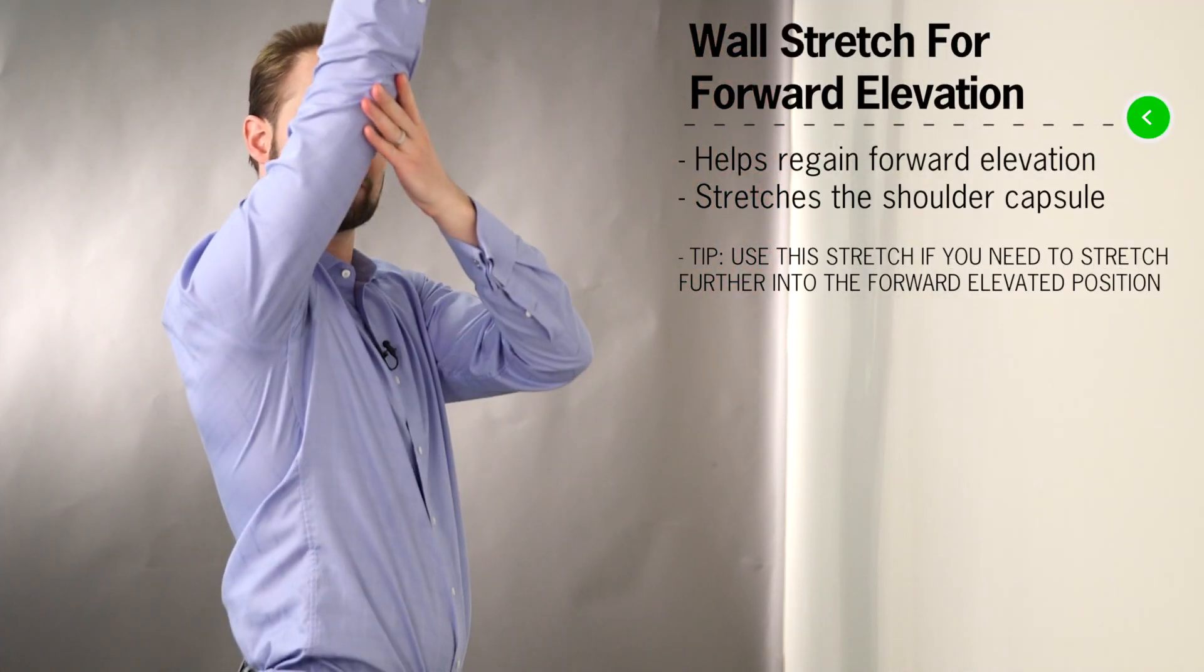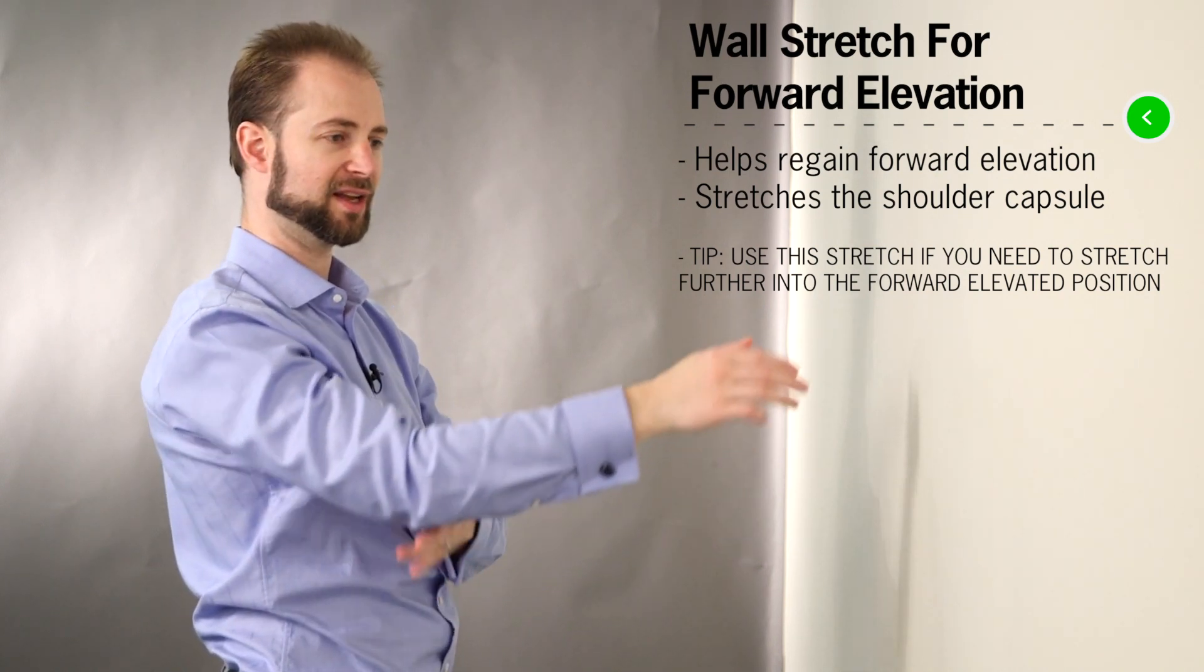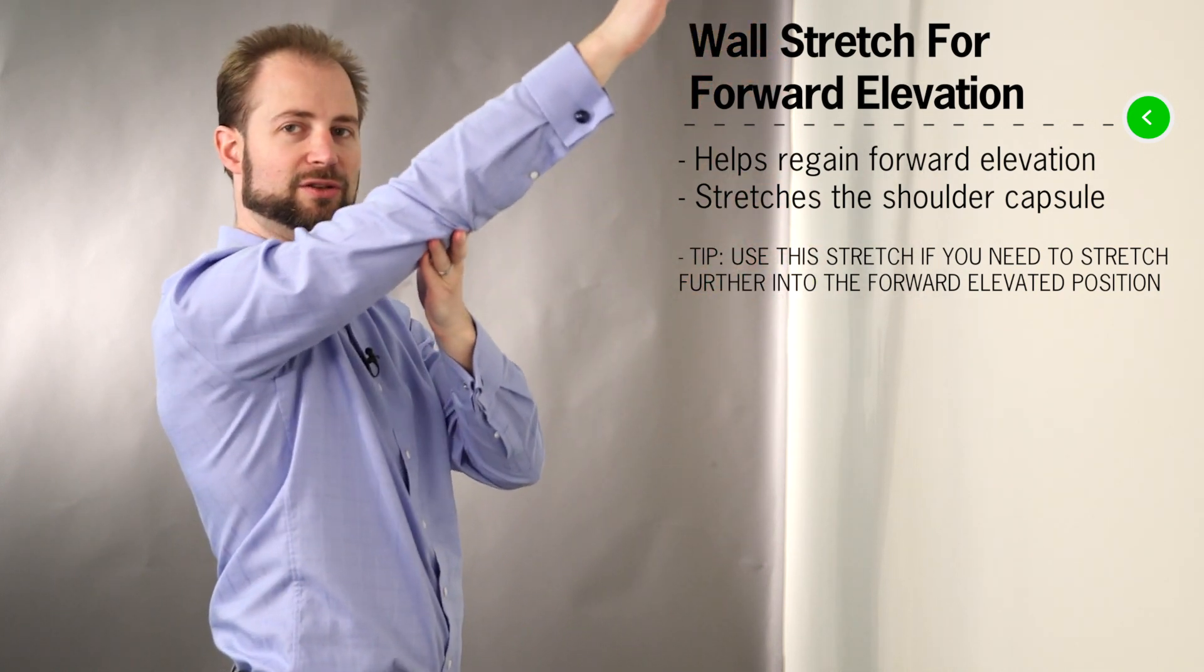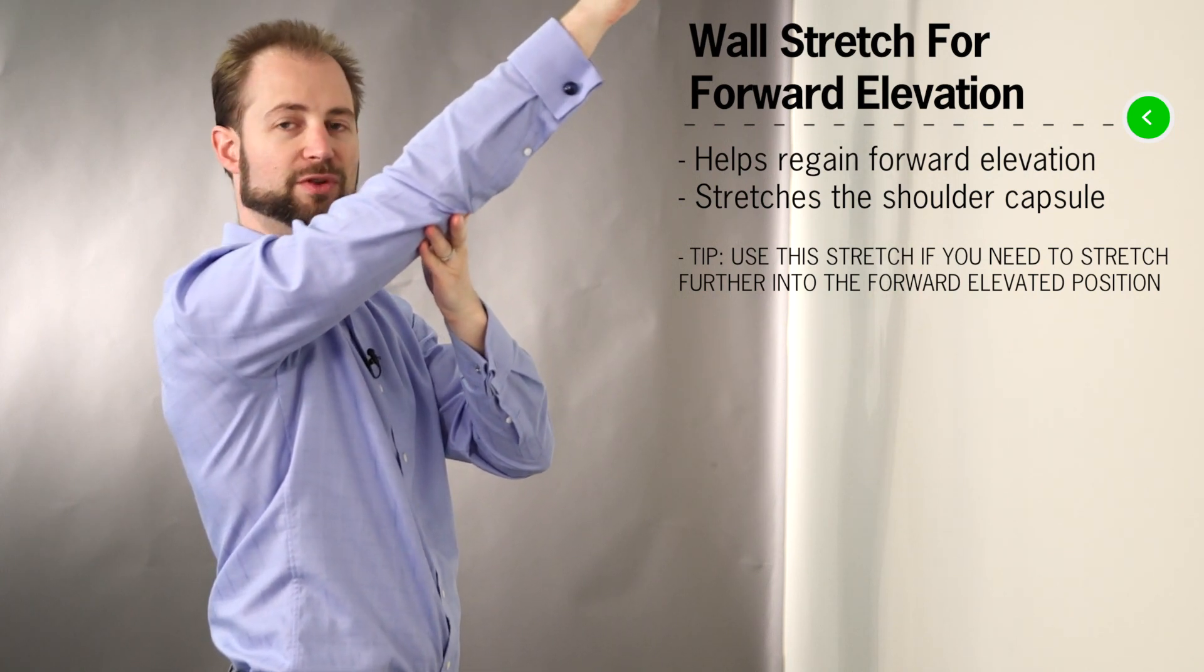This is the wall stretch for forward elevation, regaining this motion with your shoulder. After using the table stretch, most people find that they can't quite get their shoulder stretched out beyond here with the table, so we typically move to the wall at this point.